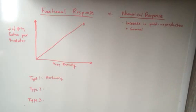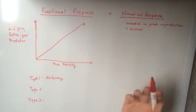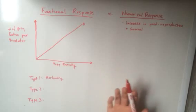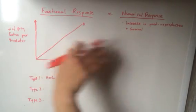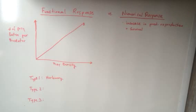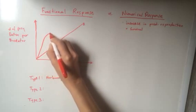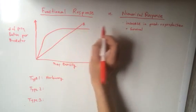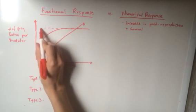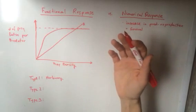A second functional response is type 2. Type 2 is basically an increase in prey consumption by the predator, but then it will slowly start to plateau. There's an increase until it reaches a certain point of capacity in which the predator can consume.